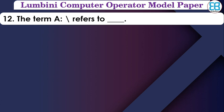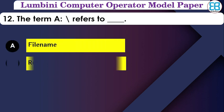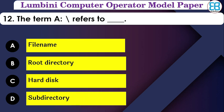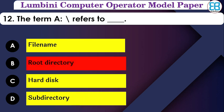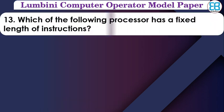Backslash refers to what? The options are: file name, root directory, subdirectory. The correct answer is root directory — backslash represents the root directory.